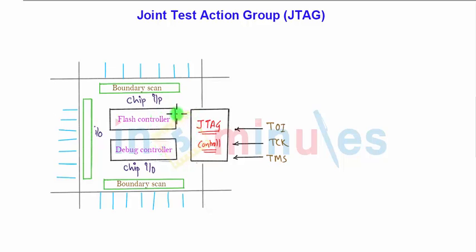And JTAG control can command the flash controller as well as debug controller, giving out the outputs to JTAG. JTAG is controlling the debug controller outside and the flash controller and debug controller.